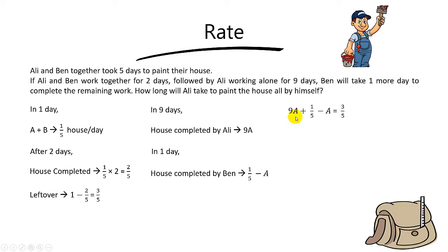So from here, let's solve the equation. When you take 9A minus A, you get 8A. And when you bring over the 1 out of 5, you get 3 out of 5 minus 1 out of 5, you get 2 out of 5. So to find A, you take 2 out of 5 divided by 8, you get 1 over 20.